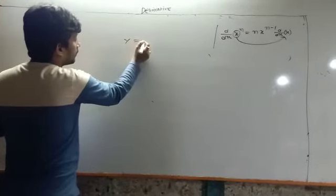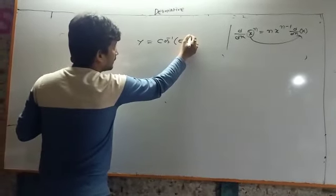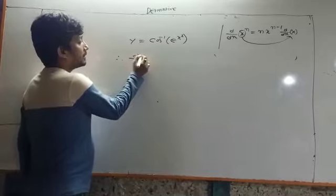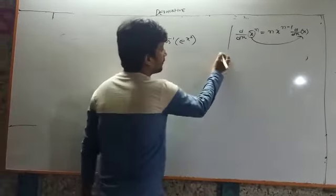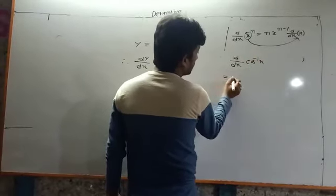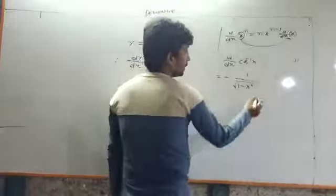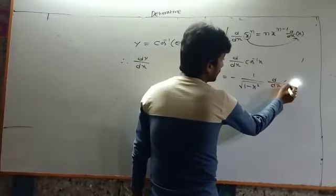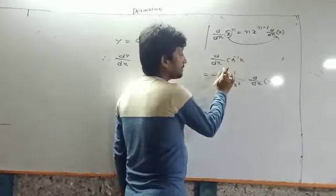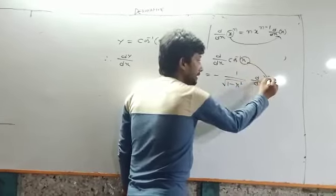y equal to cos inverse of e to the power x square. dy by dx equal to cos inverse x, ddx of cos inverse x, minus one by root over one minus one square.